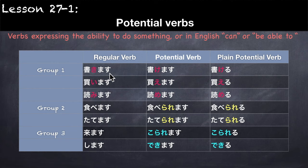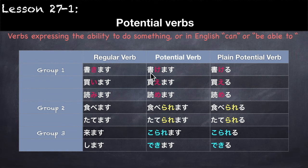For example: かきます, which means 'to write' — change the き syllable to け, so it becomes かけます (be able to write / can write). For the plain potential form: かける. Another example: かいます (to buy) → かえます / かえる. Another example: よみます (to read) → よめます / よめる.